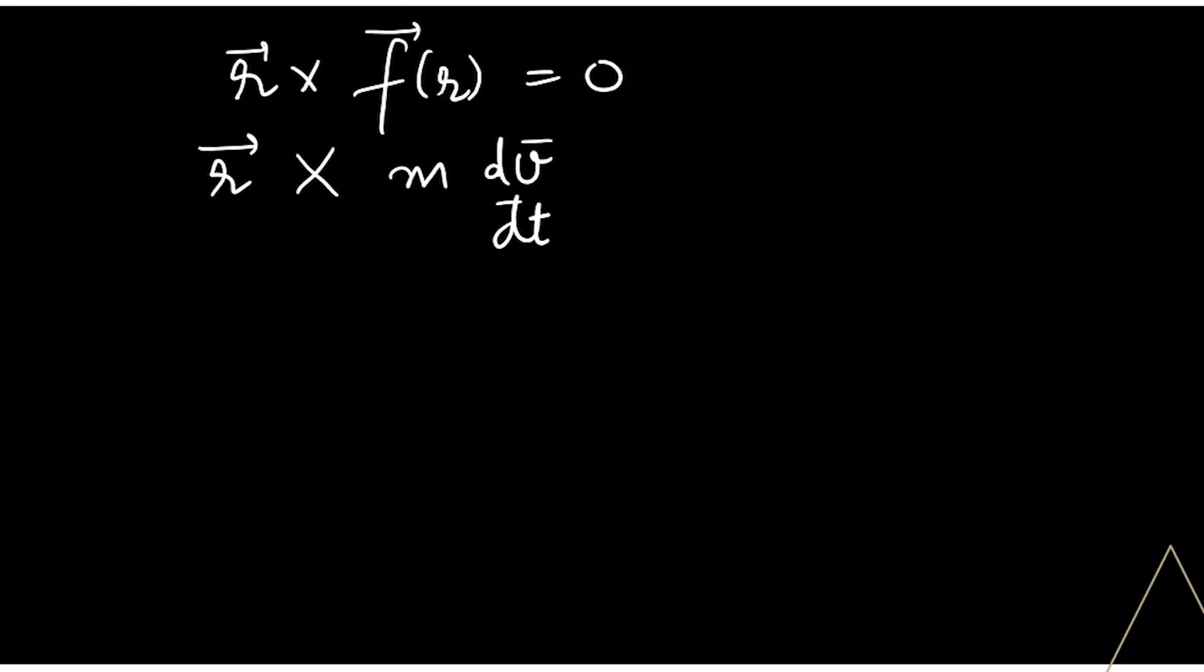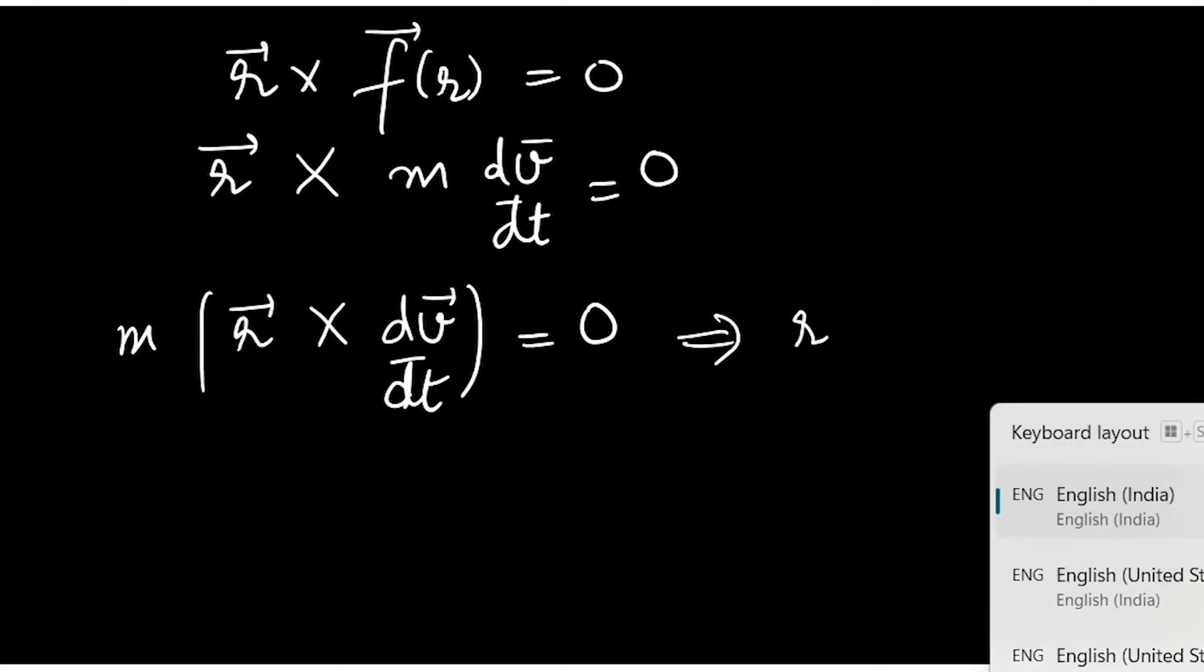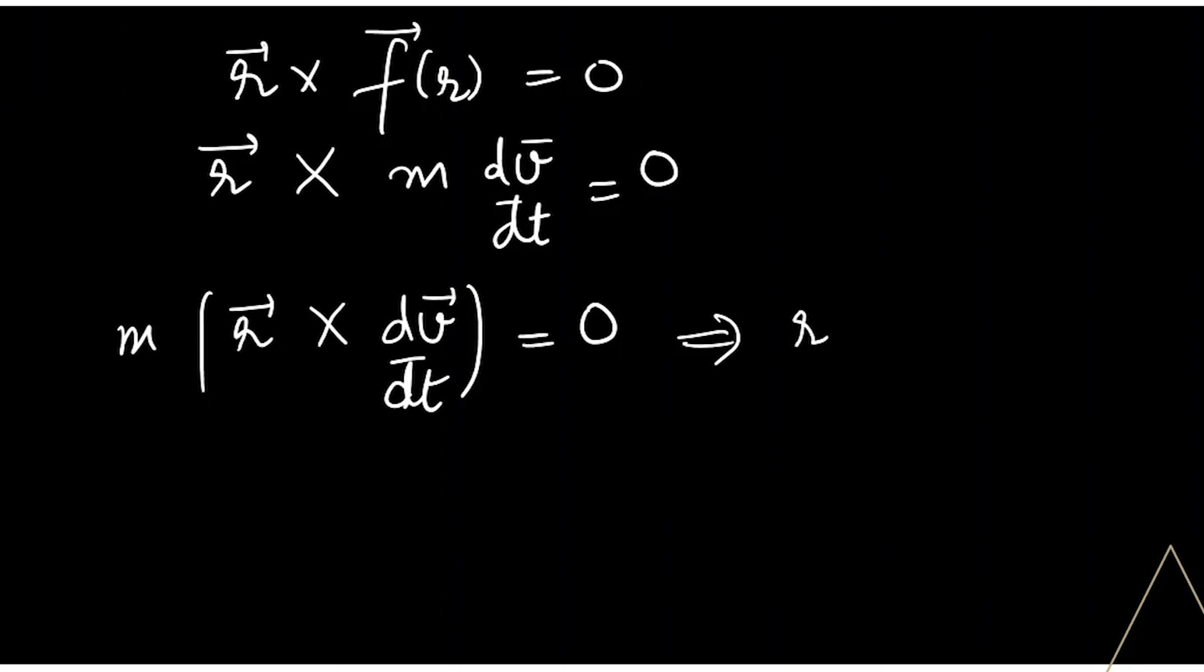So we can write this as R cross m dv/dt equal to zero. Also we can write this above expression as d/dt(R cross V) equal to zero.